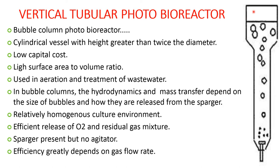Vertical tubular photobioreactor — the first type is the bubble column photobioreactor. Here the cylindrical vessel has a height greater than twice the diameter, low capital cost, and a high surface area to volume ratio. It is used in aeration and treatment of wastewater. In the bubble column, the hydrodynamics and mass transfer depend on the size of the bubbles and how they are released from the sparger.